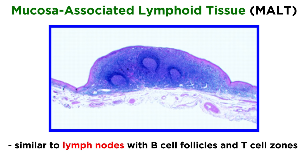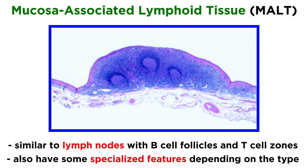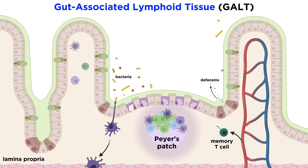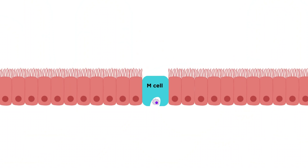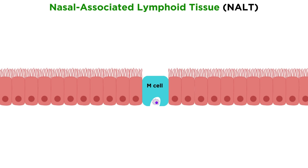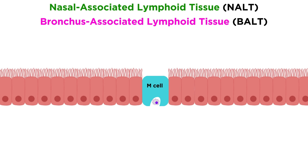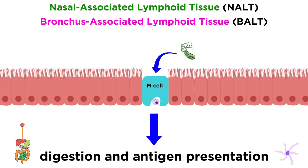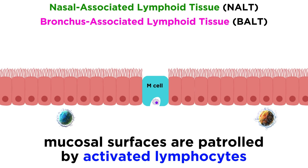MALT structures are similar to lymph nodes, with B-cell follicles and T-cell zones, but they have some specialized features depending on the tissue type. For example, gut-associated lymphoid tissue, or GALT, in the intestine is supplied with antigen from special cells called microfold cells, or M-cells. M-cells continuously sample antigen from the intestinal lumen and transfer it to the Peyer's patches, which are a type of GALT in the small intestine. M-cells in nasal-associated lymphoid tissue and bronchus-associated lymphoid tissue, or NALT and BALT respectively, catch inhaled microbes and microbes trapped in mucus, making them available for digestion and antigen presentation by dendritic cells.